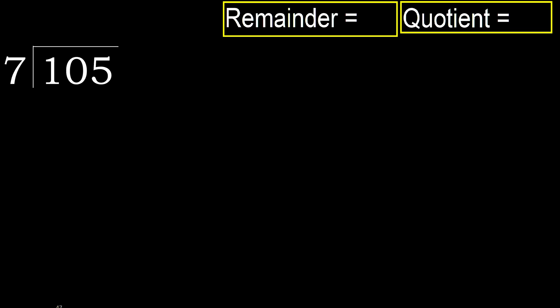105 divided by 7. 1 is less, therefore next 10 — 10 is not less.